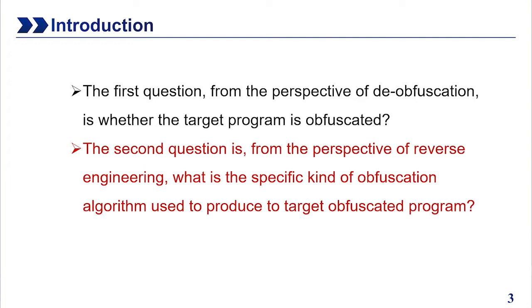In reality, researchers often face complex unknowns in the form of extracted code. This leads to two related problems. The first question, from the perspective of de-obfuscation, is whether the target program is obfuscated. For example, if existing de-obfuscation techniques are applied to a program that does not contain obfuscated code, not only will the internal logic of the original program be broken, it also causes the analyst to spend a lot of time doing useless work. The second question is, from the perspective of reverse engineering, what kind of obfuscation algorithm was used to produce the target obfuscated programs?